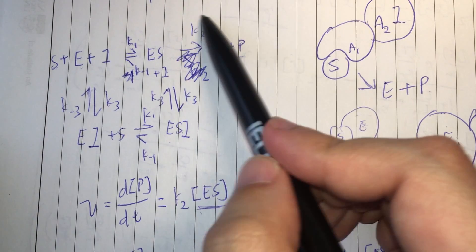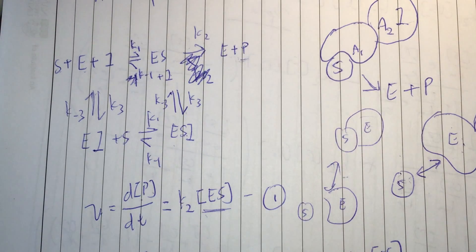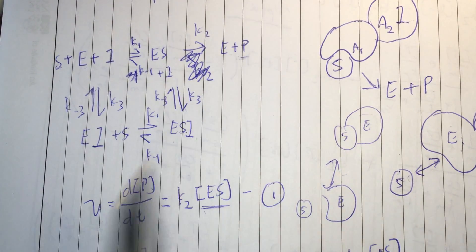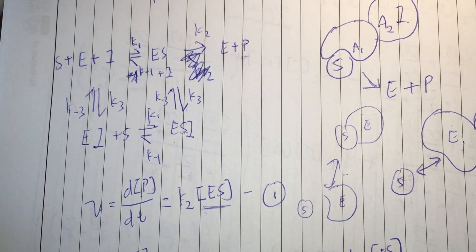Or rather, the only limiting rate is this R2 or this K2 here. This reaction is limiting. So, everything else will be formed in relatively quick equilibrium.